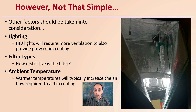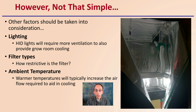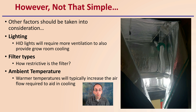There are other factors to take into consideration — it's not as simple as doing a quick math equation. You also want to consider your lighting. If you're using high-intensity discharge lighting, it will require more ventilation and also provide grow room cooling. Also consider the filter type — how restrictive is the actual filter you're using? Some of the more expensive ones have finer carbon particulate and will flow a little better. Also, what is the ambient temperature? Warmer temperatures will typically increase the airflow required to aid in cooling, so you should be closer to one exchange per minute.